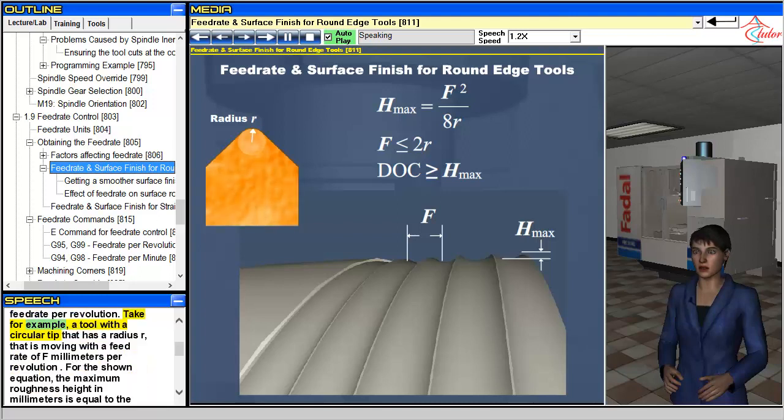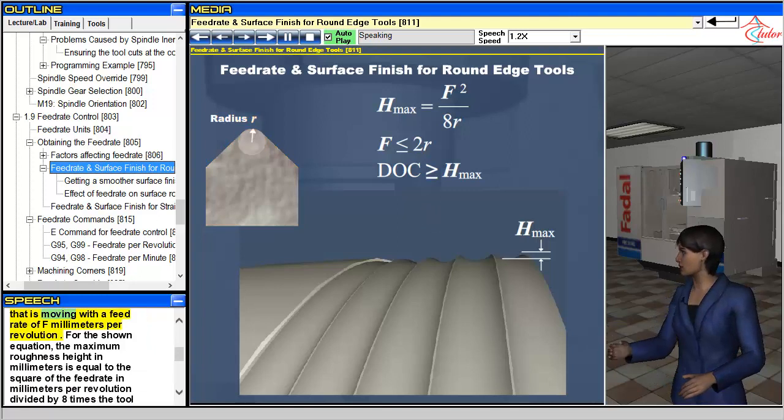Take for example, a tool with a circular tip that has a radius r, that is moving with a feed rate of f millimeters per revolution.